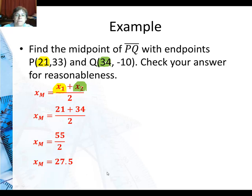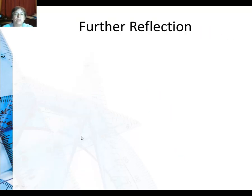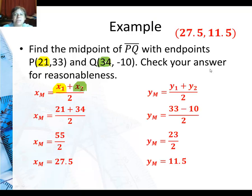Doing the same thing for the y coordinate, 33 plus negative 10 all over 2, which is 23 over 2, or 11.5. Our answer is 27.5 comma 11.5.